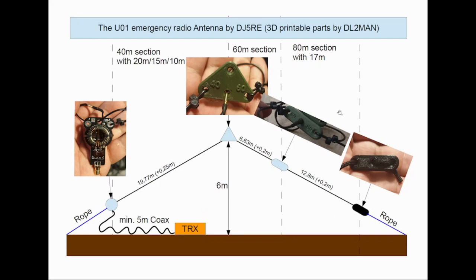The same is for the 60 meter section. You have 6.63 meters and add another 20 centimeters to that, 10 centimeters for this loop, 10 centimeters for this loop. And the same thing, you measure 12.8 meters, add 20 centimeters. 10 centimeters for this loop and 10 centimeters to put it to the insulator. This rope here can be like three or four meters.